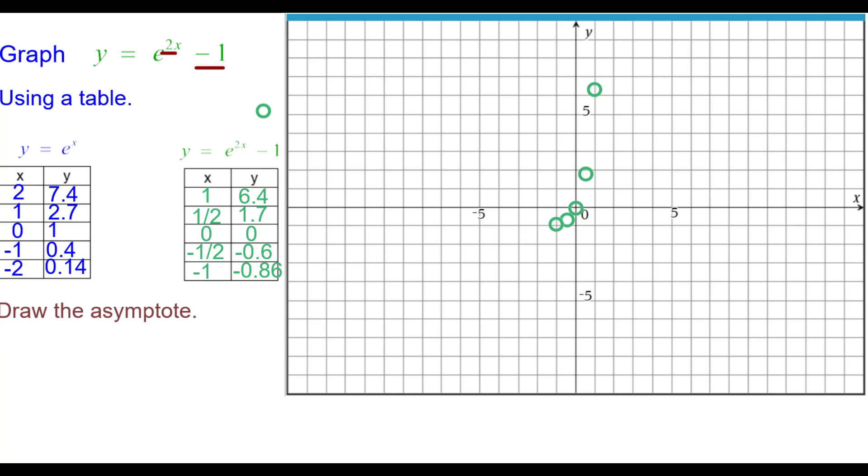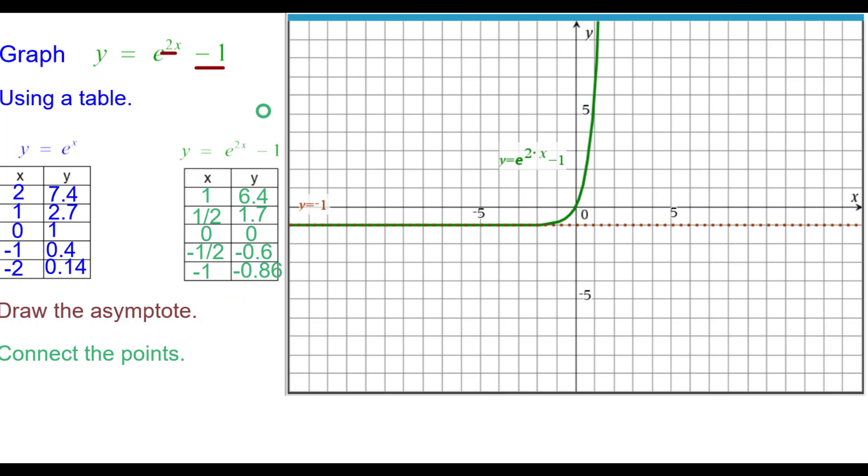We need to draw the asymptote. You can see it's going to be flattening out along the line y equals negative 1. So we'll draw that line. And connect the points to make it look like an easy chair. And we also like to compare it to the parent function.